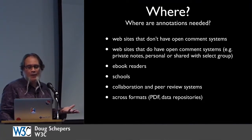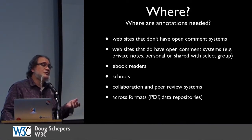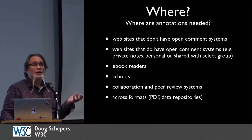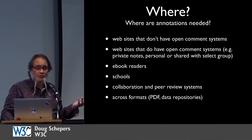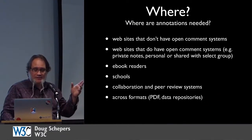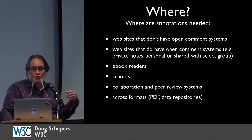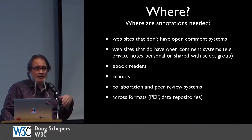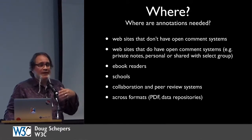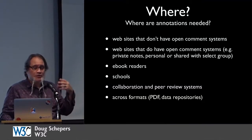Where are annotations needed? On websites that don't have open comment systems, on websites that do but where you want private annotations or to share with a select group. On e-book readers — Kindles, Sony e-book readers, Kobo, Nook, and all others. In schools, where education is increasingly using these. And in collaboration and peer-review systems, and across formats — connecting annotations to data, PDF documents, and other formats.